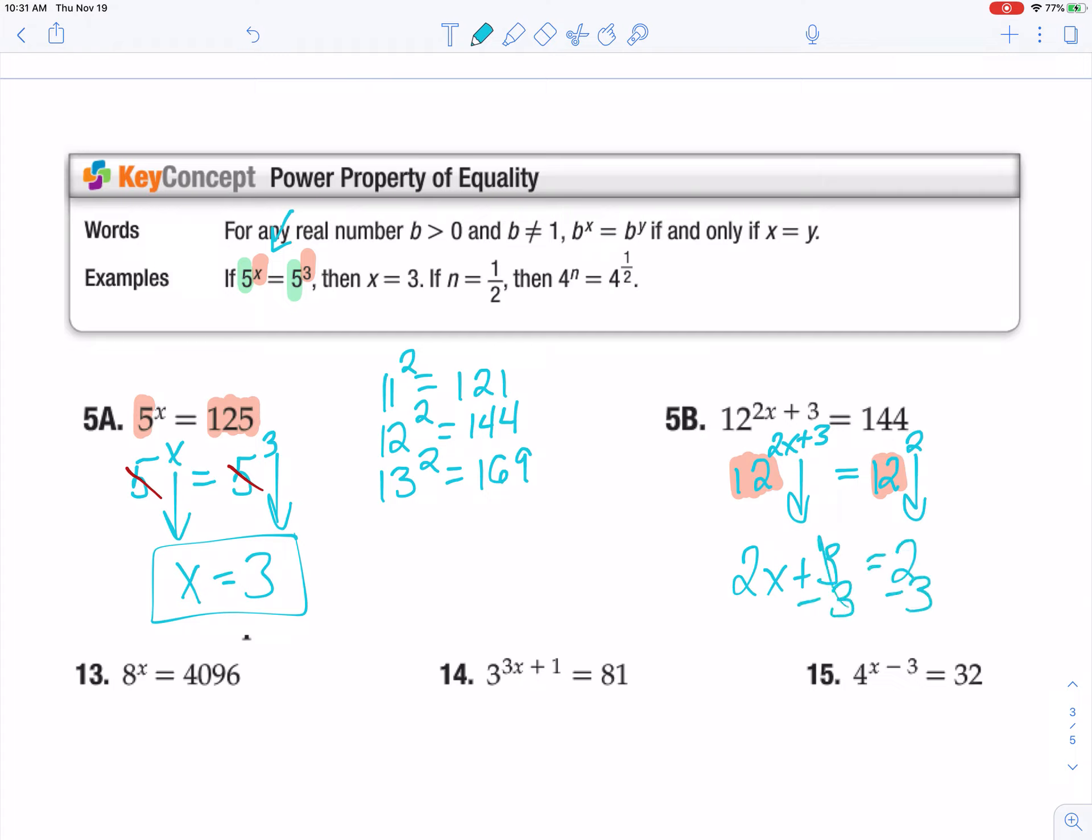And the good news is, that's just a happy little two-step equation that I know how to solve. 2x equals 2 minus 3 is negative 1. X equals negative 1 half. That's your answer.